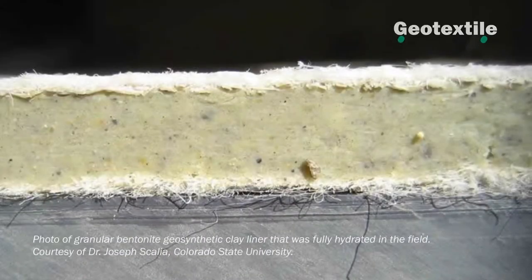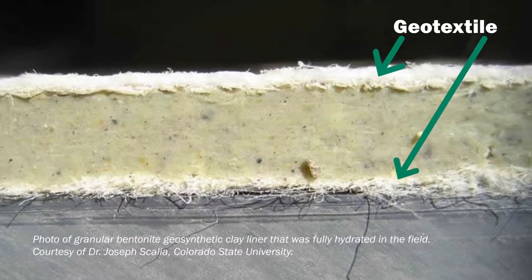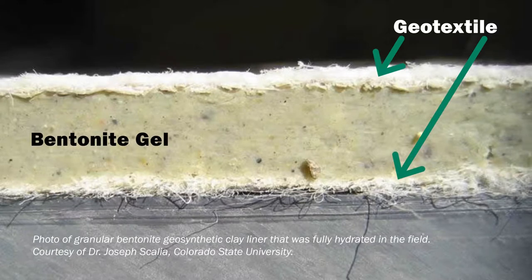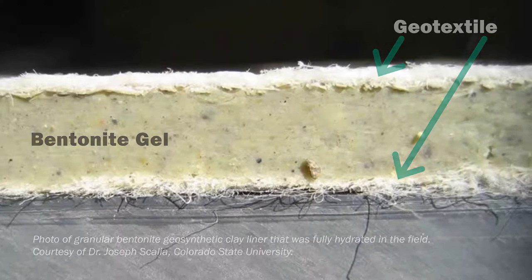When a geosynthetic clay liner roll is installed, it begins to absorb moisture from the subgrade soil because sodium bentonite has a very strong affinity for water. As it hydrates, the bentonite rapidly swells and transitions to a gel-like state. The gelled bentonite, encapsulated between geotextiles, forms a seamless monolithic membrane barrier to hydraulic flow.